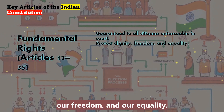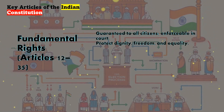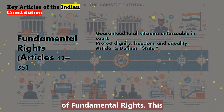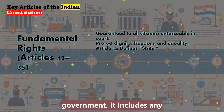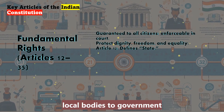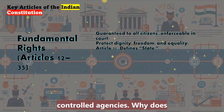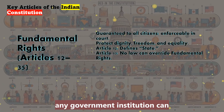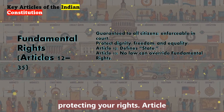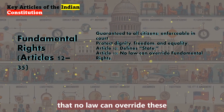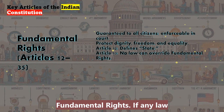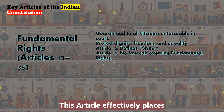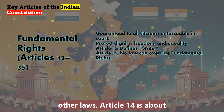These articles protect our dignity, our freedom, and our equality. Article 12 defines what the state includes in the context of fundamental rights — this isn't just the central government, it includes any authority with power, from local bodies to government-controlled agencies, meaning any government institution can be held accountable for protecting your rights. Article 13 is crucial as it ensures that no law can override these fundamental rights. If any law is found to violate these rights, it's declared void. This article effectively places the Constitution above all other laws.